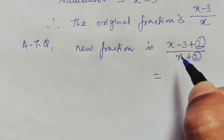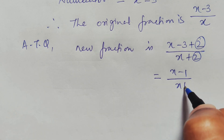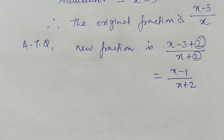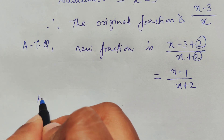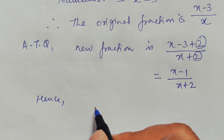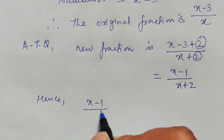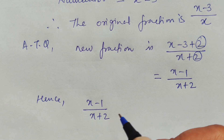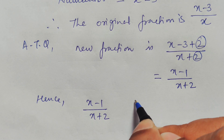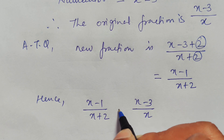So we have x minus 1 over x plus 2 as the new fraction, and x minus 3 over x as the original fraction. Their sum equals 29 upon 20. Now we need to simplify the left-hand side by finding a common denominator and solving this algebraic equation.